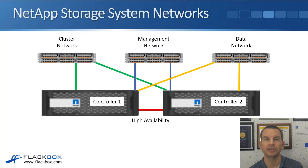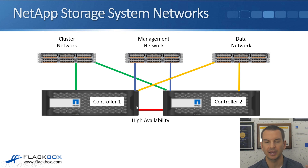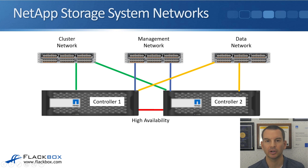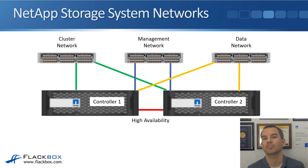In the diagram here, you can see controller one on the left and controller two on the right. This is not a chassis with two controllers in it — controller one and controller two are separate. Each of the controllers is connected to the cluster, management, and data network, and there's also a high availability connection between those two nodes.